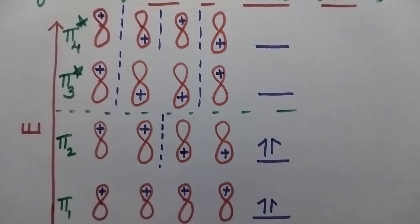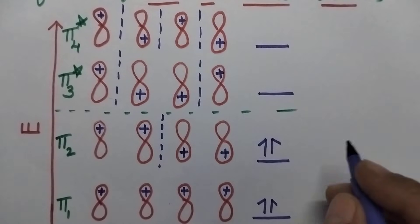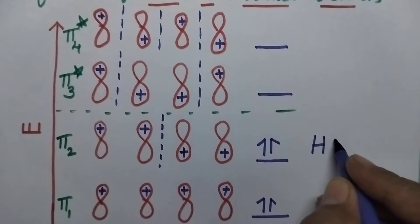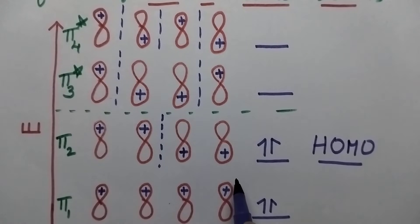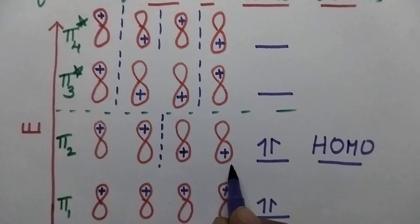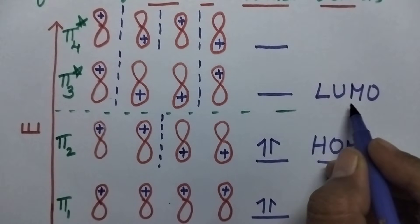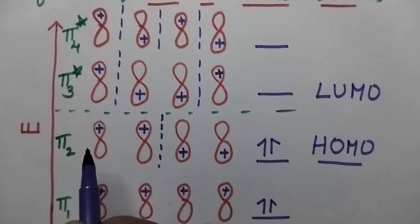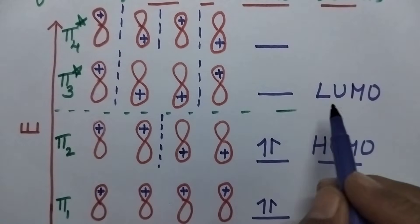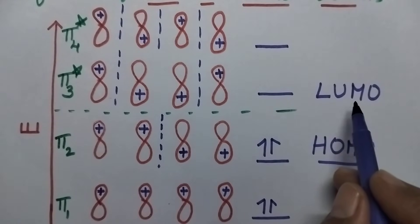The most important feature is to identify the highest occupied molecular orbital, HOMO. π2 is the highest occupied molecular orbital — it is the highest energy level with filled electrons. The second term is LUMO, which means lowest unoccupied molecular orbital — the molecular orbital with the lowest energy without electrons. So π3* is the LUMO, whereas π2 is the HOMO.